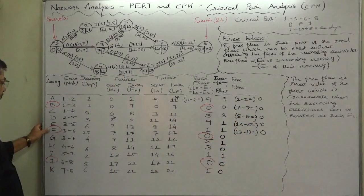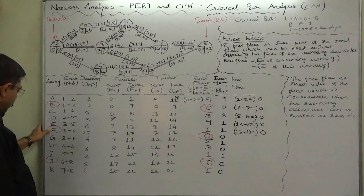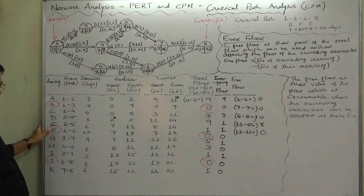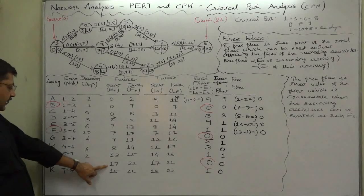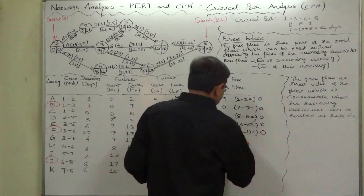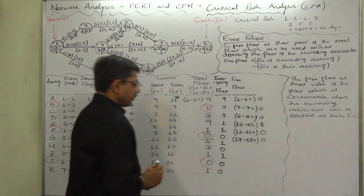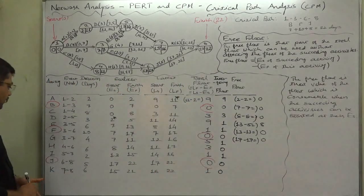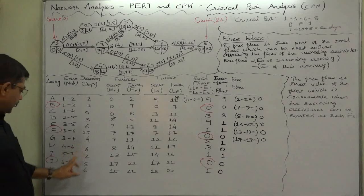In case of F, the free float would be 0 because F is a critical activity. Let's check: the successor of F is J. Earliest start time of J is 17 and earliest finish time of F is 17, so 17 minus 17 equals 0. It must be 0 because it is a critical activity.